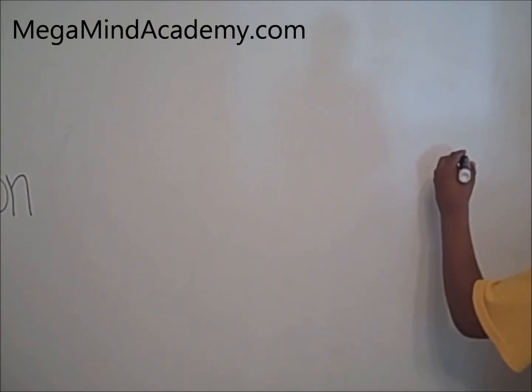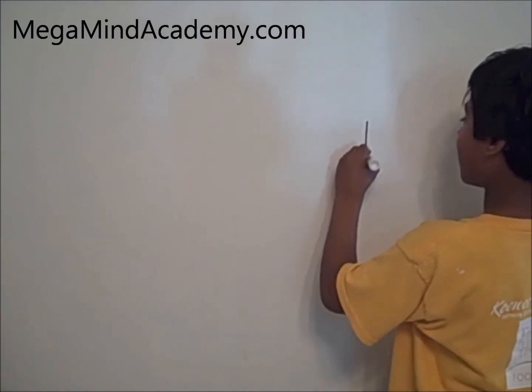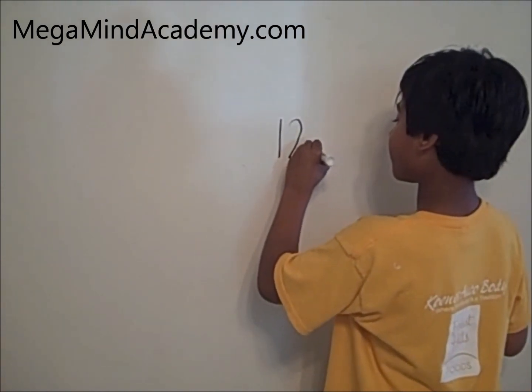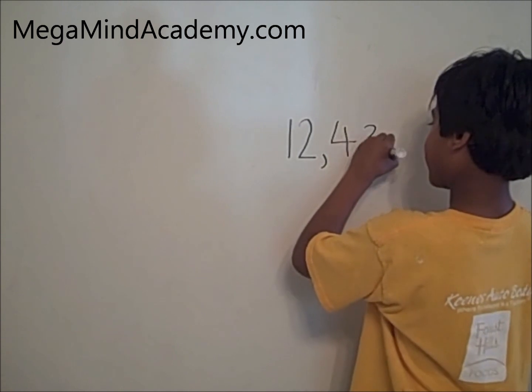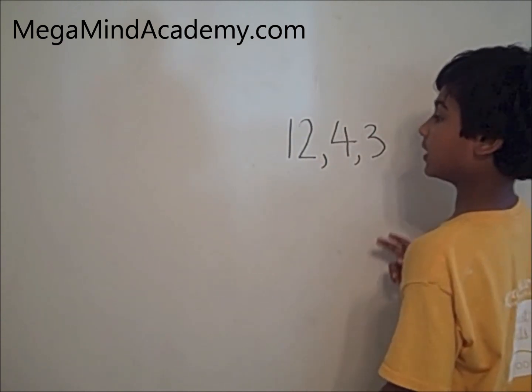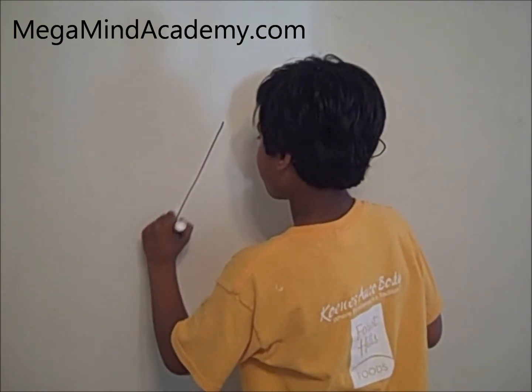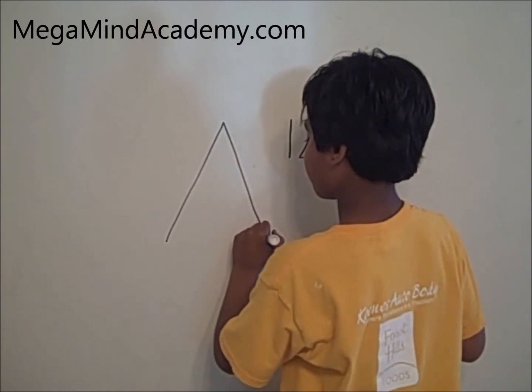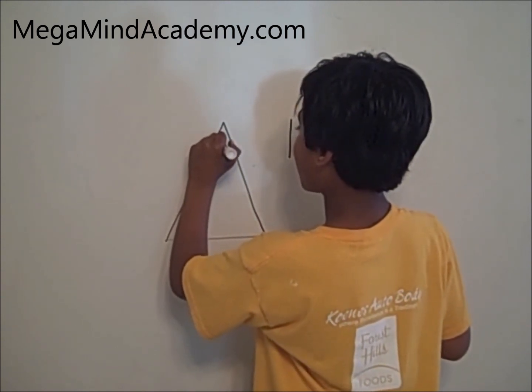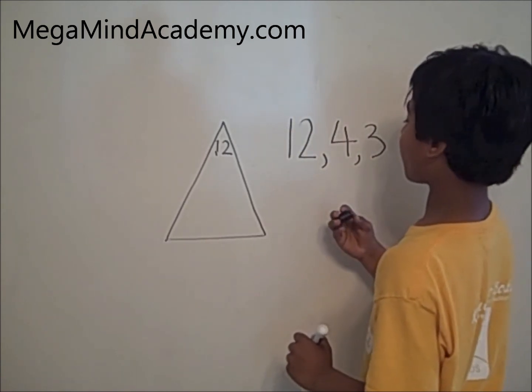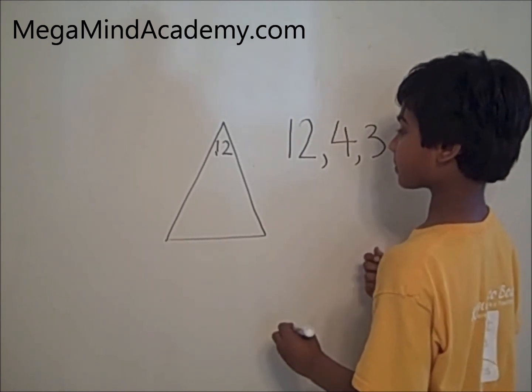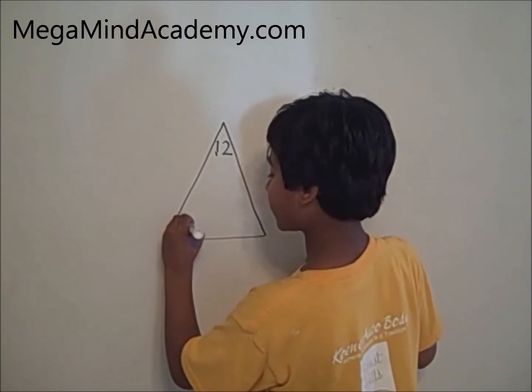Now, let's look at these numbers: 12, 4, and 3. Let's put these numbers inside the triangle. 12 goes at the top because it is the product of 4 and 3. 4 and 3 go at the bottom.